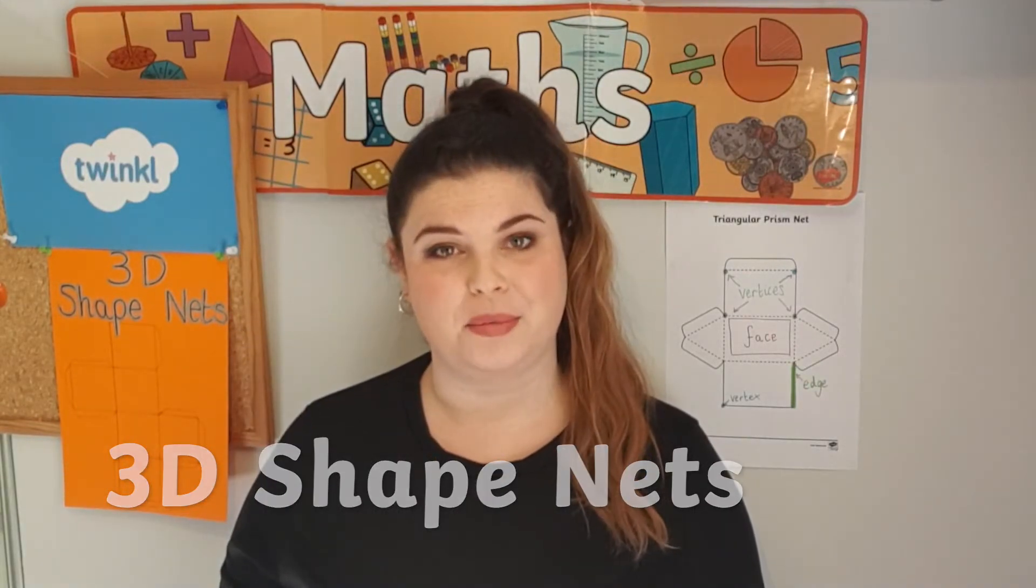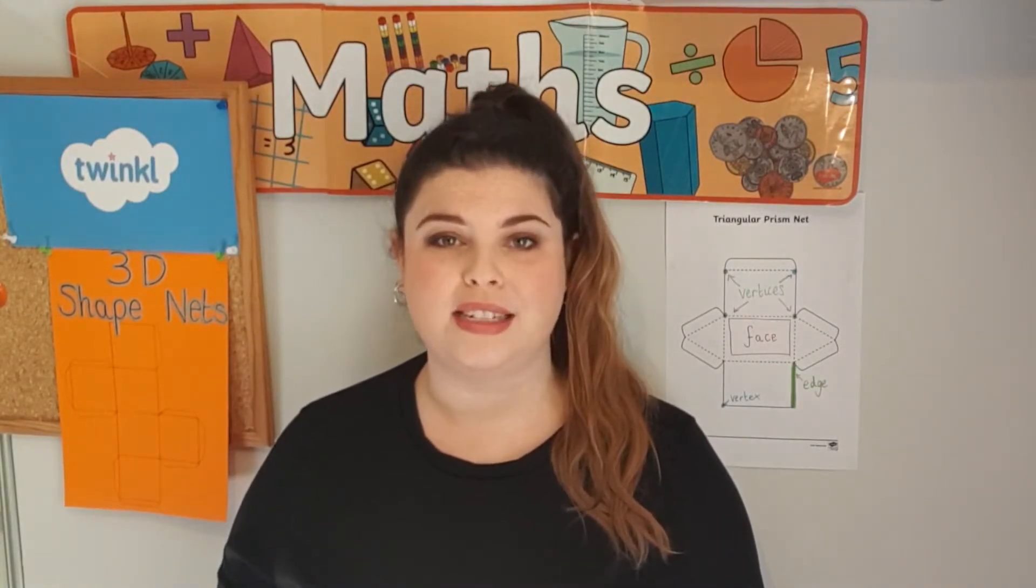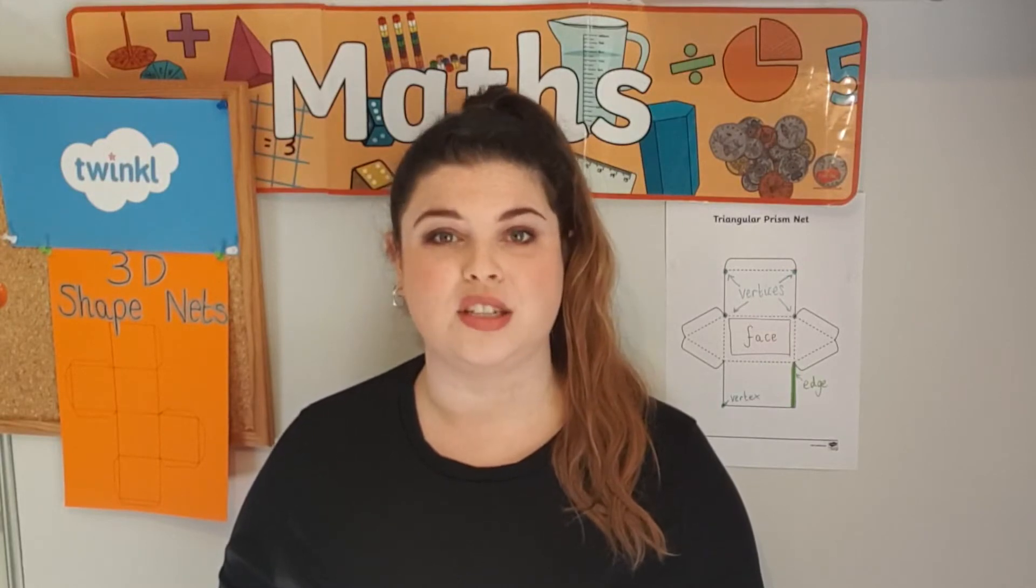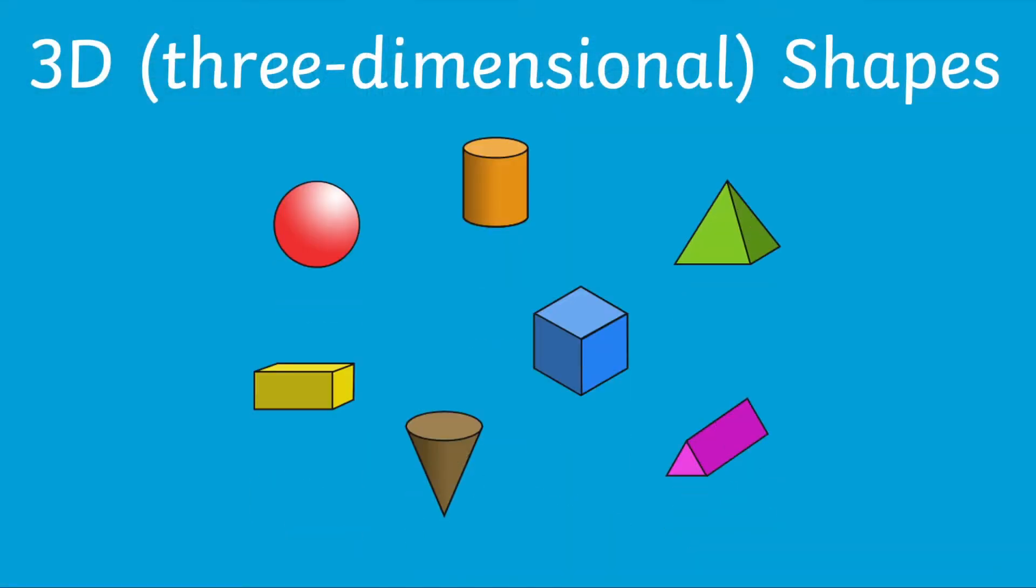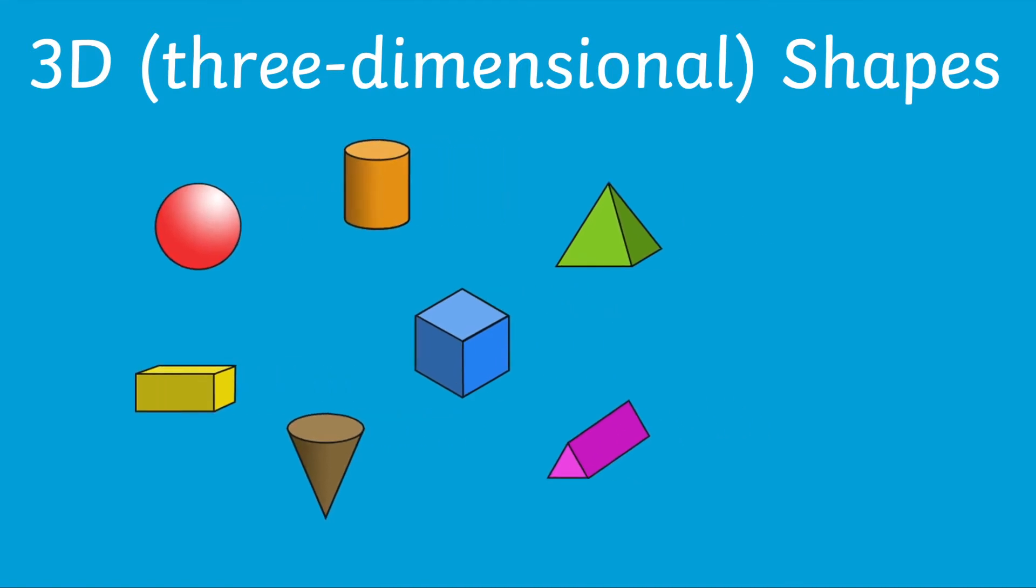So what is a 3D shape? In geometry, a 3D or three-dimensional shape is a solid shape that has three dimensions including length, depth, and width.